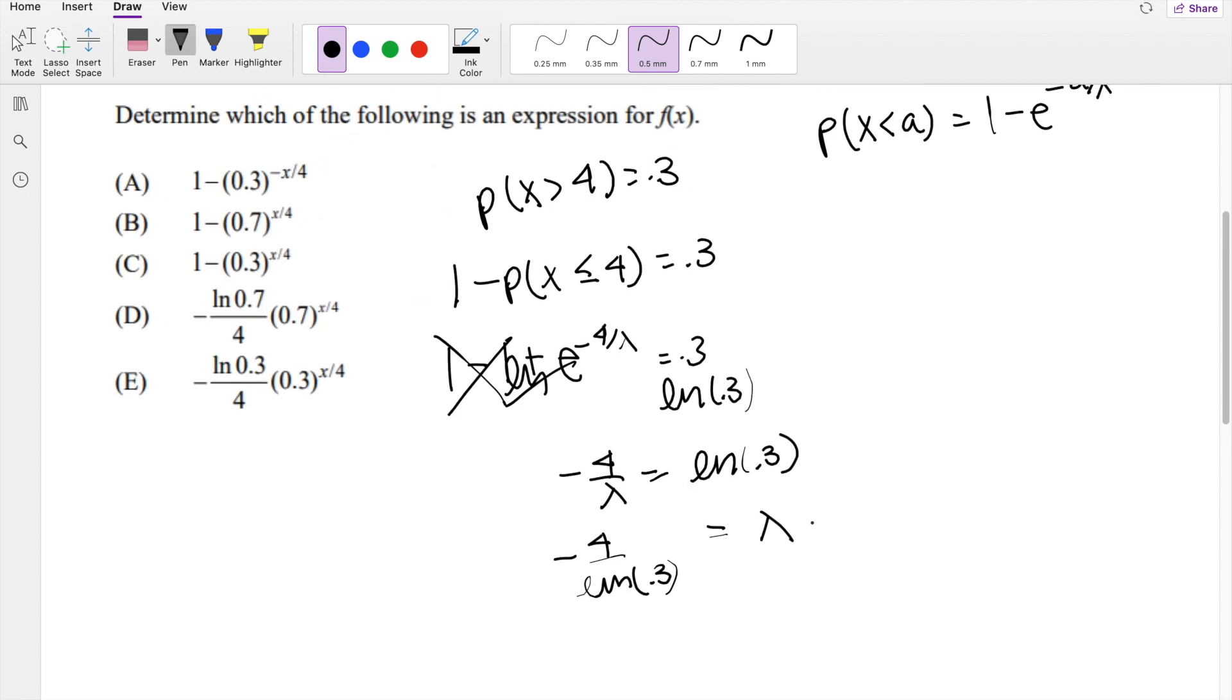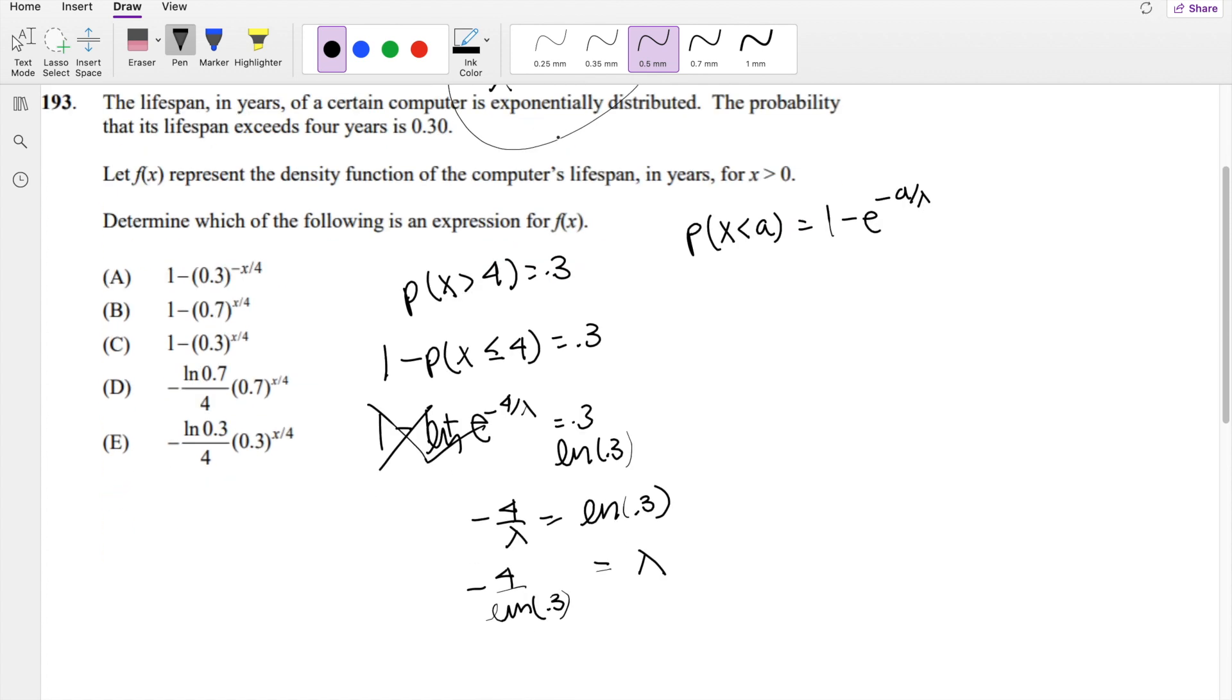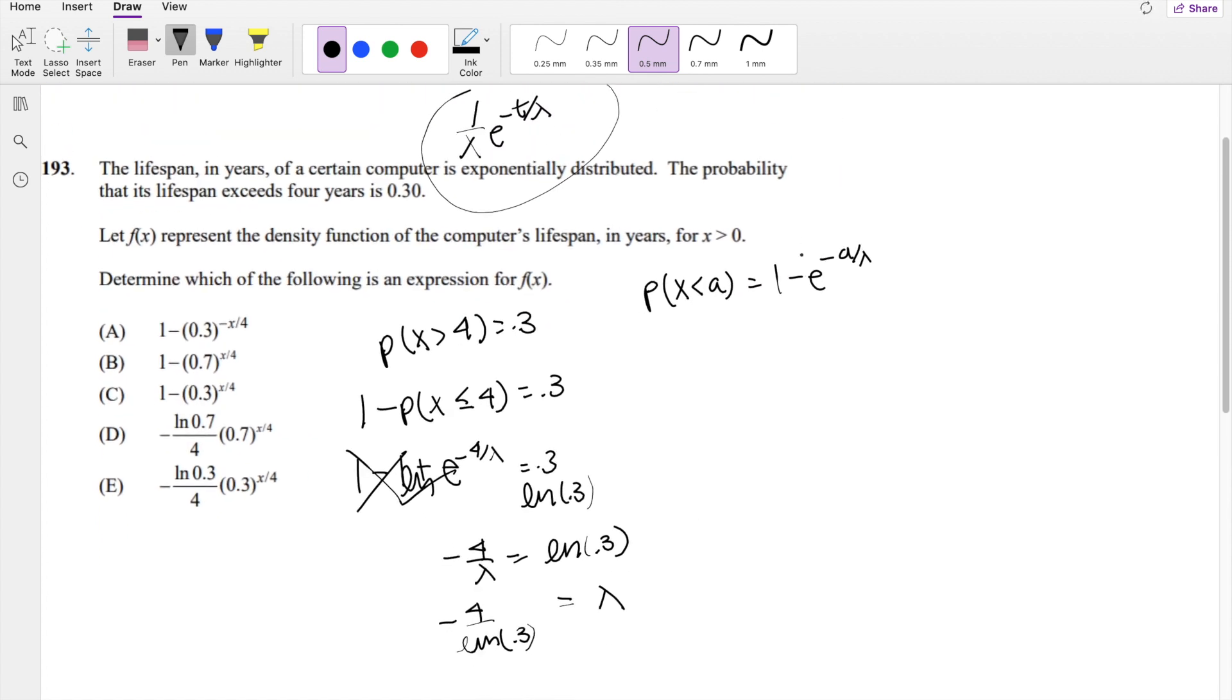So now we're just looking for f of x, because we have all the ingredients we need. F of x is 1 over lambda, so that's equal to negative natural log of 0.3 over 4, e to the negative t over lambda. Lambda, which we know is right here. So the two negatives make a positive t over 4 natural log of 0.3.